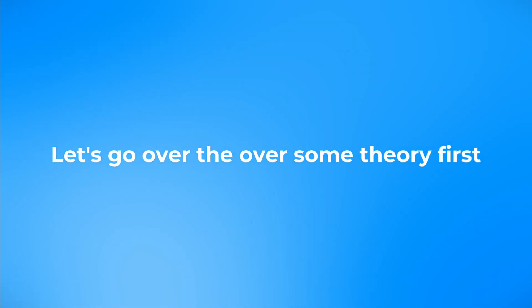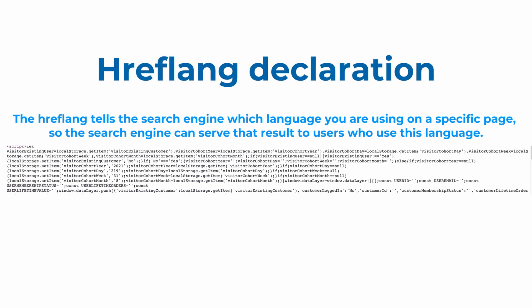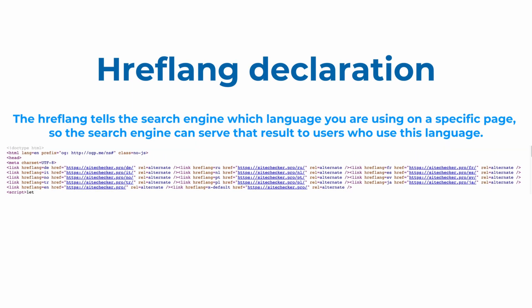First, let's cover the theory of hreflang. The hreflang tells the search engine which language you are using on a specific page, so the search engine can serve that result to users in a specific location or people who use this language.